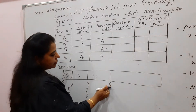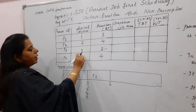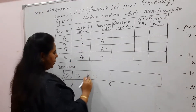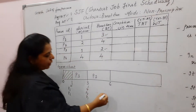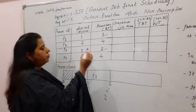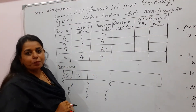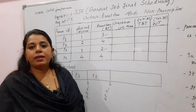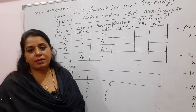Next, at time 6, the last process arrived at time 4, so all processes are available. We have already scheduled P3 and P1, so the remaining are P2 and P4. P2 has a burst time of 4 and P4 also has a burst time of 4 — they are equal. When two processes have the same burst time, we check their arrival times to break the tie.